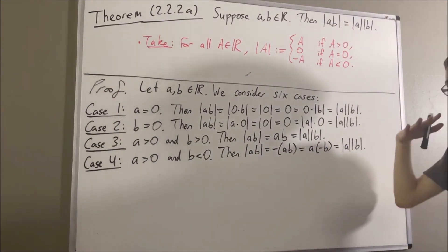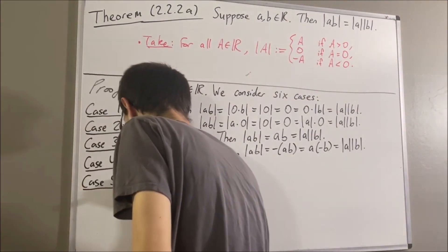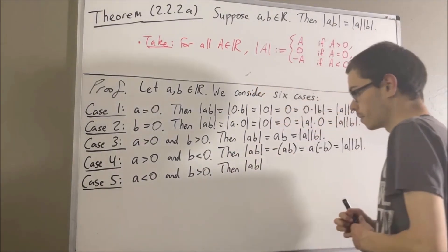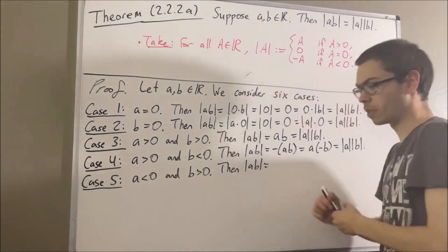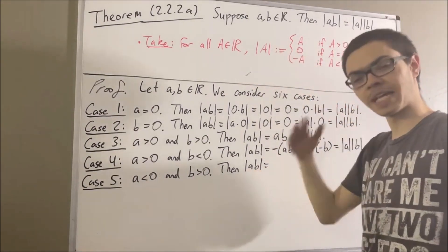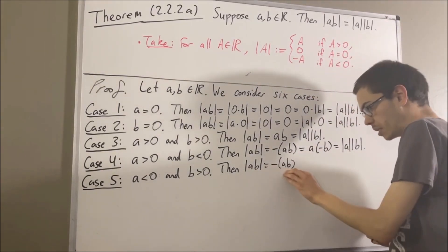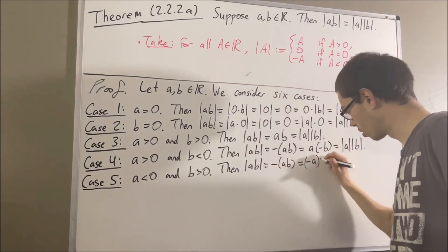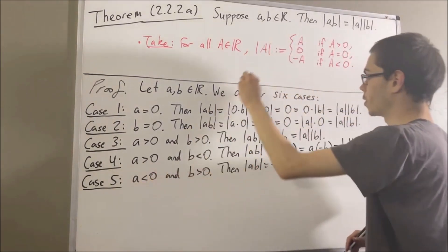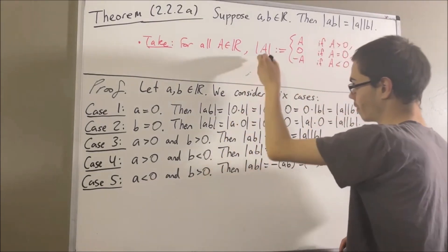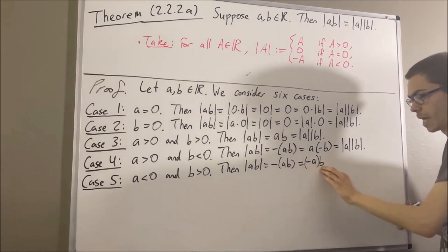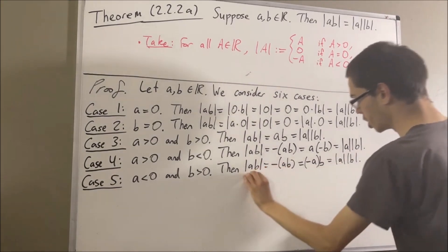Now let's move on to the next case, where A is less than zero and B is greater than zero. Again, we're going to establish a chain of equalities showing that these two are equal. Since A is less than zero and B is greater than zero, this implies A times B is less than zero. So applying the definition of absolute value, the absolute value of A times B is equal to the negative of A times B. But the negative of A times B is the same thing as the negative of A times B. By definition of absolute value, since A is less than zero the absolute value of A is equal to the negative of A, and since B is greater than zero the absolute value of B is equal to B. So we can replace the negative A with absolute value of A and replace the B with absolute value of B.